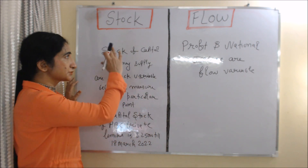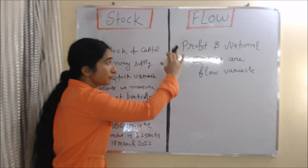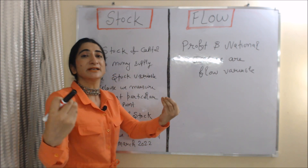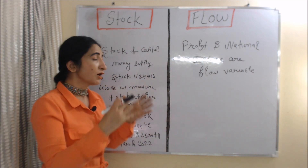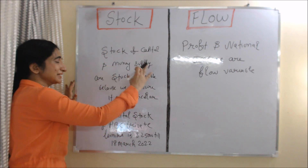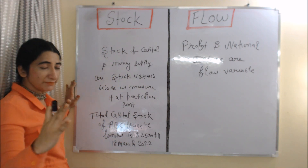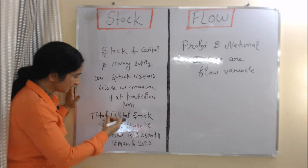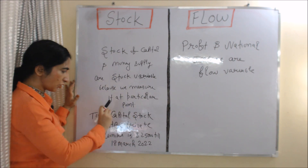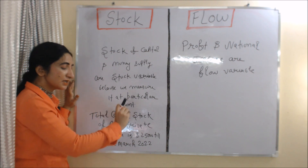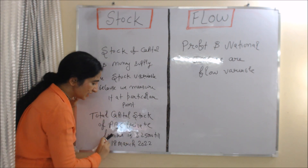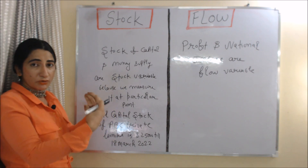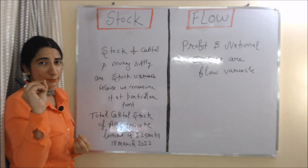Now we will see some examples of stock and flow variables. Profit and national income are flow variables, because we measure them on a yearly basis. On the other hand, stock of capital and money supply are stock variables, because we measure them at a particular point of time. For example, if I say the total capital stock of ABC Private Limited is $25,000 till 18 March 2022, I am measuring the stock of capital of this company at a particular point.